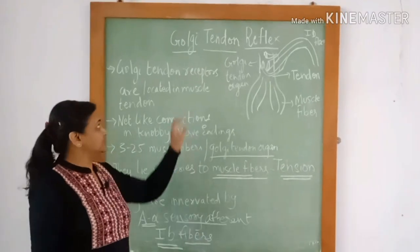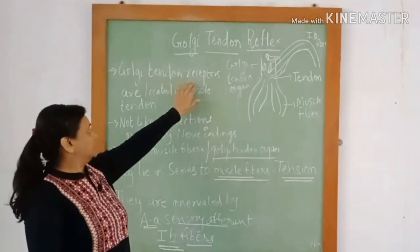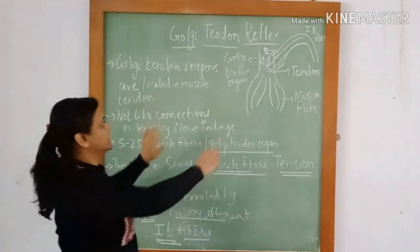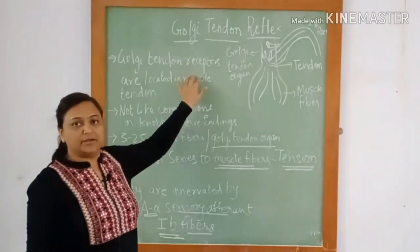Good morning all. Let us discuss Golgi tendon reflex. Golgi tendon receptors are located in the muscle tendon. They are called Golgi tendon organ.